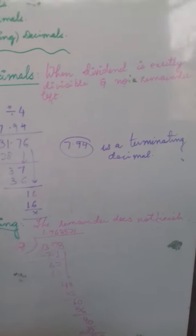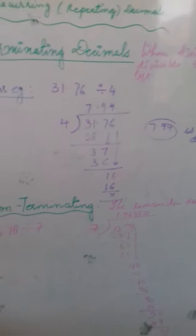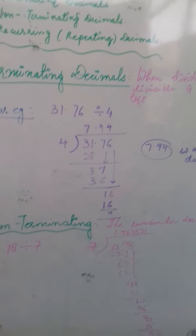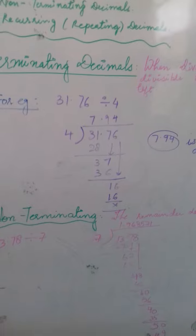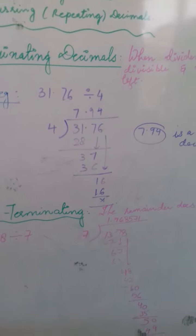When dividend is exactly divisible and no remainder is left, in such case the answer is called terminating decimal. For example, 31.76 divided by 4. Can you see children?